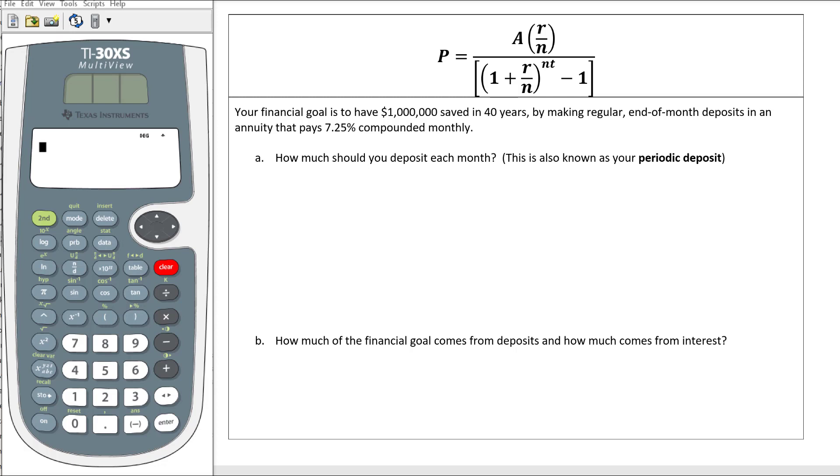Okay, for our last example, your financial goal is to save $1 million saved in 40 years by making regular end-of-the-month payments in an annuity that pays 7.25% compounded monthly. How much should you deposit each month?